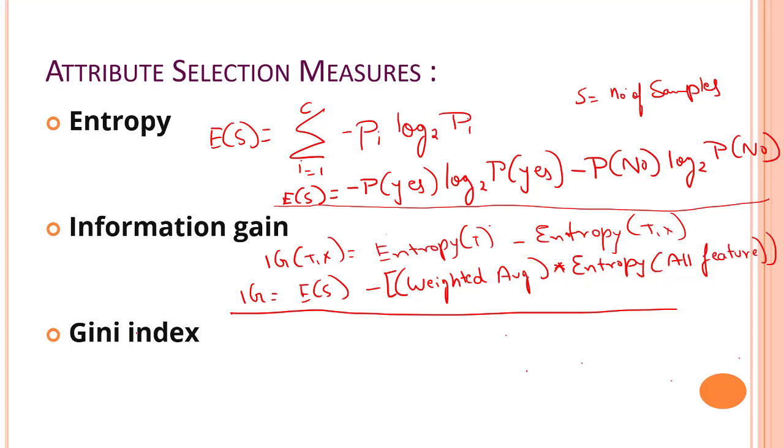An attribute with the low Gini index should be preferred as compared to the high Gini index. It only creates binary splits. That's why I have told you that it is for the CART. It is really important for the CART algorithm and information gain is quite important for our ID3 algorithm. So it only creates binary splits and the CART algorithm uses this Gini index to create the binary splits.